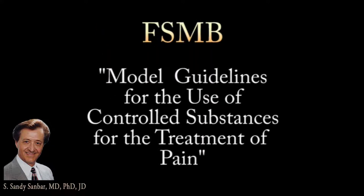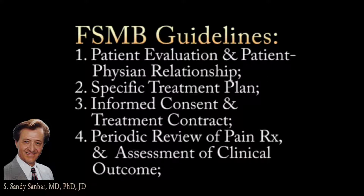The Federation of State Medical Boards model guidelines for the use of controlled substances for the treatment of pain has been adopted by most states. The guidelines distill safe opioid prescribing into seven concise principles: number one, patient evaluation including the establishment of a patient-physician relationship; number two, a treatment plan tailored to the patient's medical condition; number three, informed consent and an agreement or contract for treatment; number four, periodic review of the pain treatment with assessment of clinical outcome, be it beneficial or not.